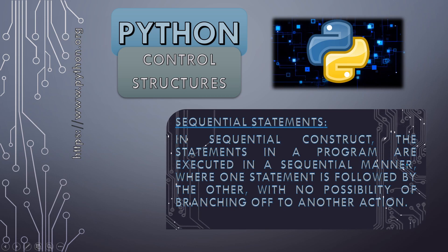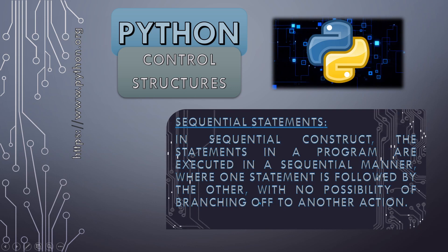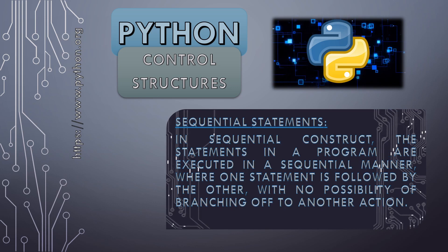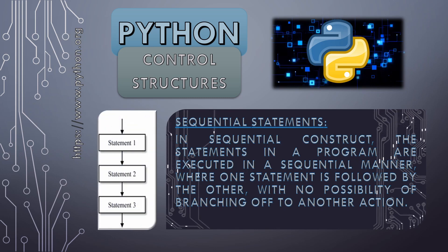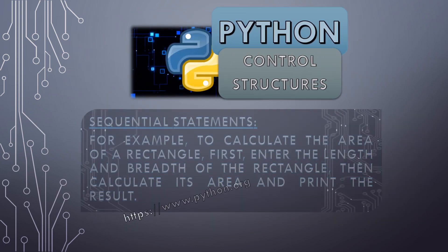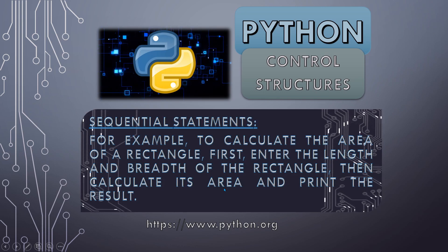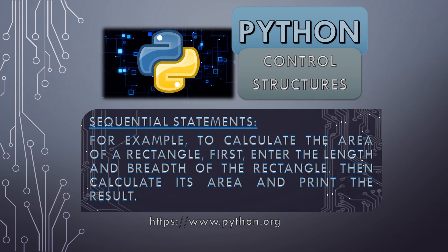In a sequential construct, statements in a program are executed one after another with no branching off to another action — there is no need to move to any other set of statements in between. For example, to calculate the area of a rectangle: first enter the length and breadth, then calculate the area, then print the result. It is simply sequential, one after another.